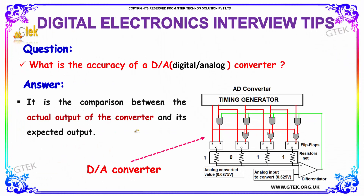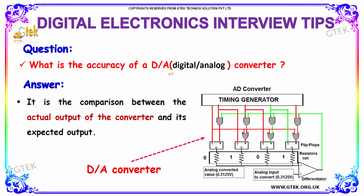The next question is: what is the accuracy of a digital-to-analog converter? The representation is in terms of D divided by A. The answer is: it is the comparison between the actual output of the converter and its expected output.